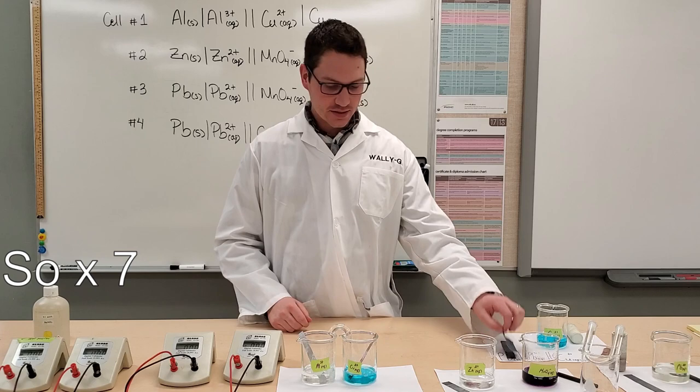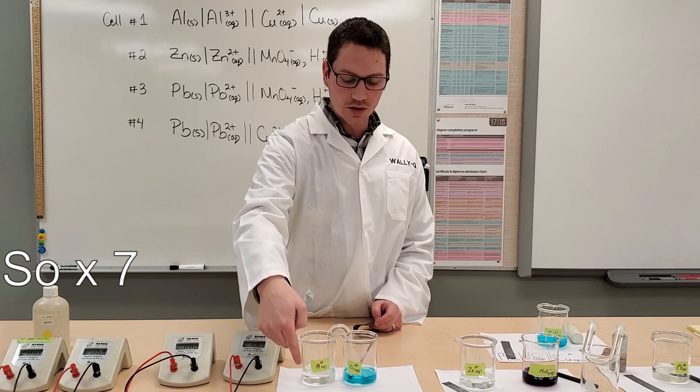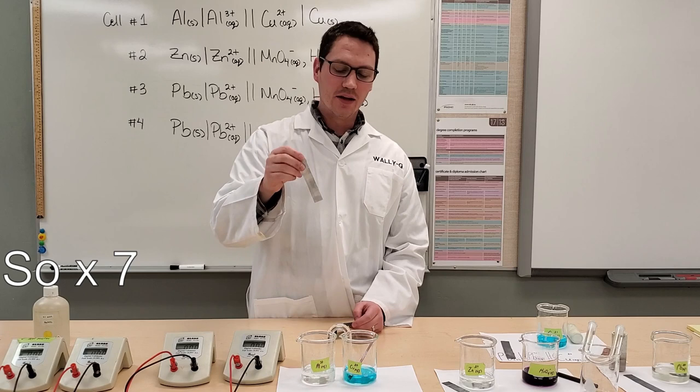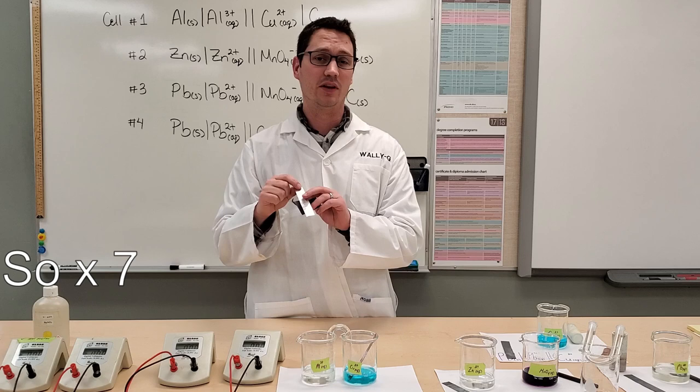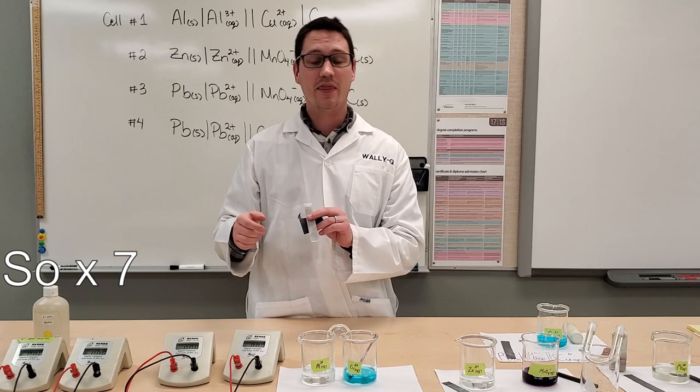And then all we need to do is put our electrodes in their respective half cells. Before we do this, here we've got aluminum. We're going to put aluminum electrode in the aluminum ions. And what we need to do is sand down the oxide layer on the outside of the electrode. If we have an oxide layer on the outside of an electrode, it can inhibit the flow of electrons and actually reduce our cell potential that we eventually get.